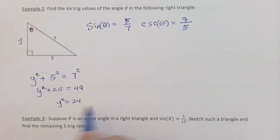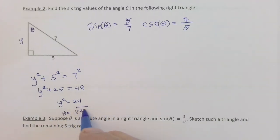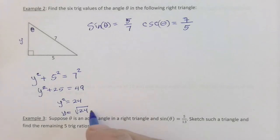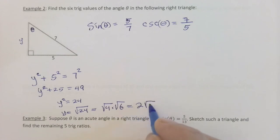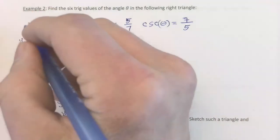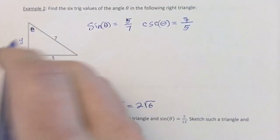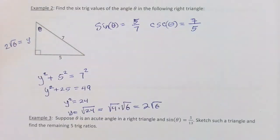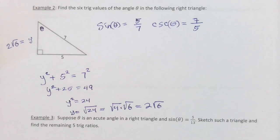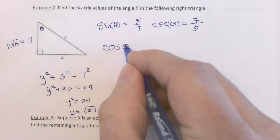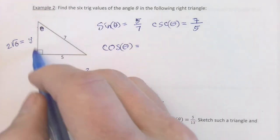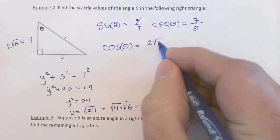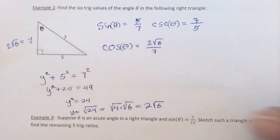Taking the positive square root: √24 = √(4×6) = 2√6. Now we know the adjacent leg is 2√6. With that, cos(θ) = adjacent/hypotenuse = 2√6/7. For the secant, we take the reciprocal: sec(θ) = 7/(2√6). Rationalizing the denominator by multiplying top and bottom by √6 gives sec(θ) = 7√6/12.